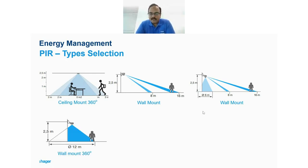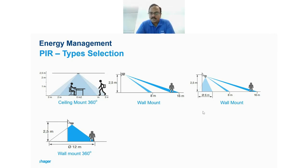For underground parking or areas with pillars where ceiling mounting isn't feasible, a wall-mount with 360-degree detection can be mounted on a pillar or pole — noting that the area directly behind the pillar will have no detection. This is a different kind of application where this mount type can be selected.